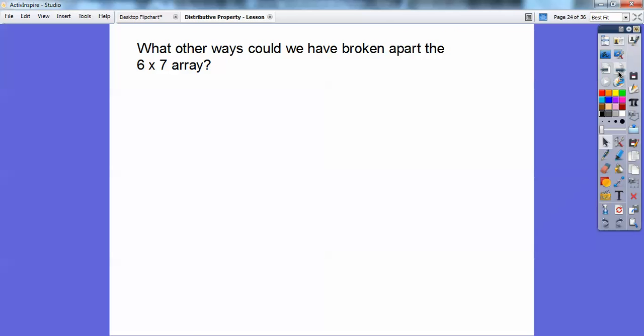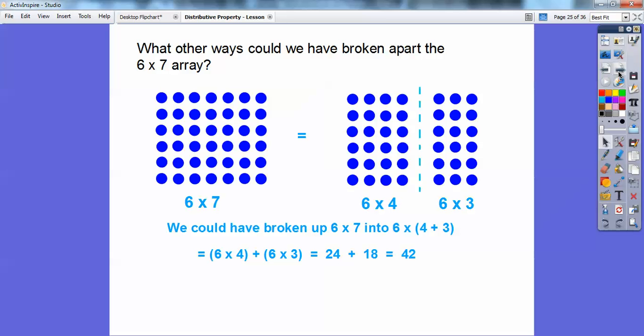What's another way we could have broken apart the 6 by 7 array? I like 6 times 5, but say we wanted to do 6 times 4 and 6 times 3, because 7 is the same as 4 plus 3. So we can do 6 times 4 plus 6 times 3. Here's six rows of four, and then here's six rows of three.